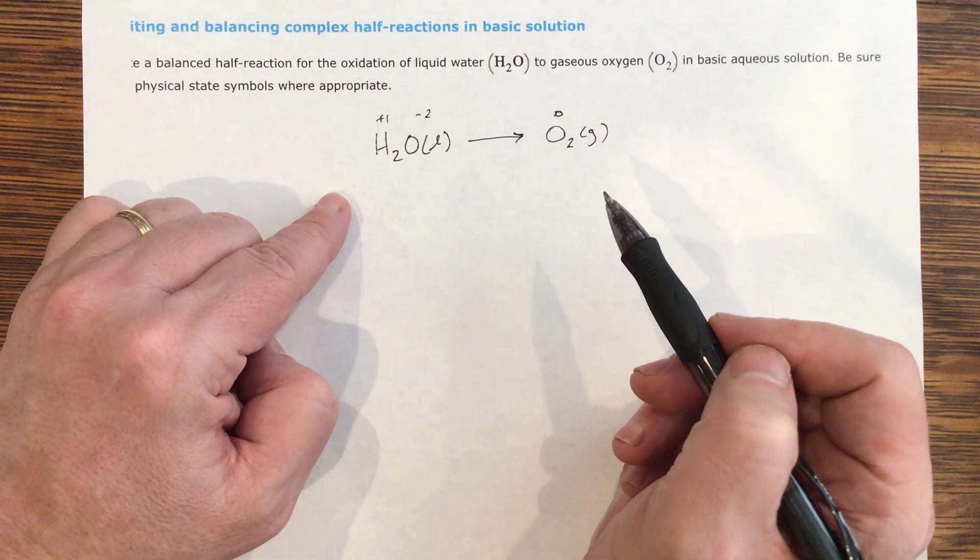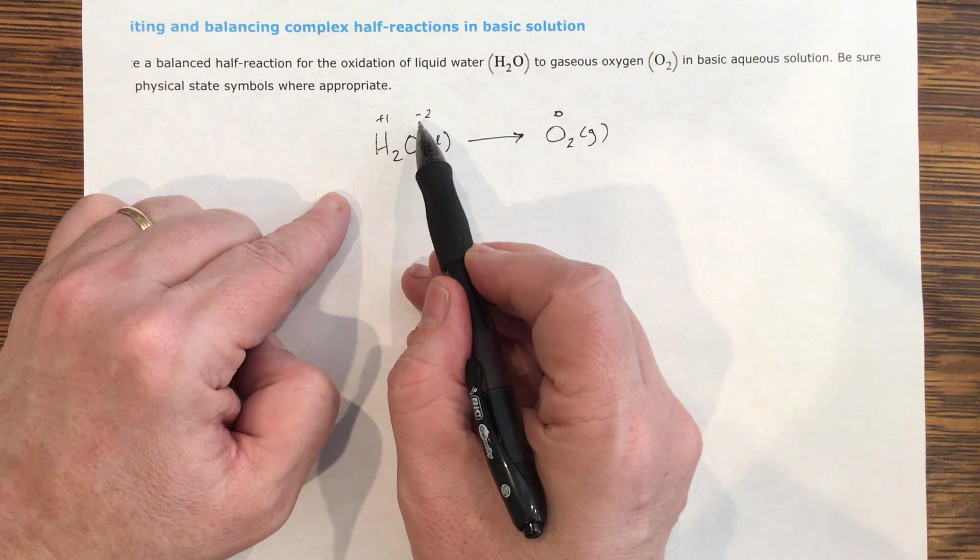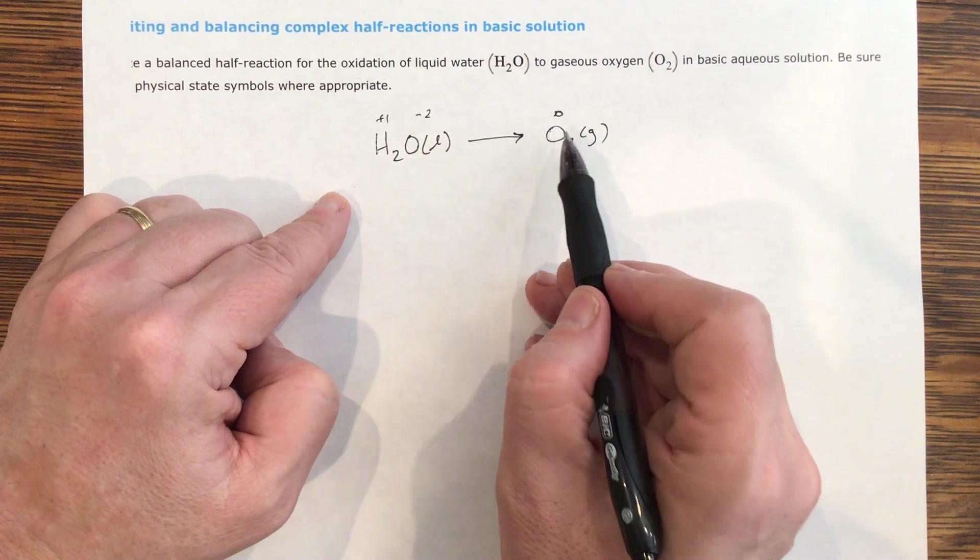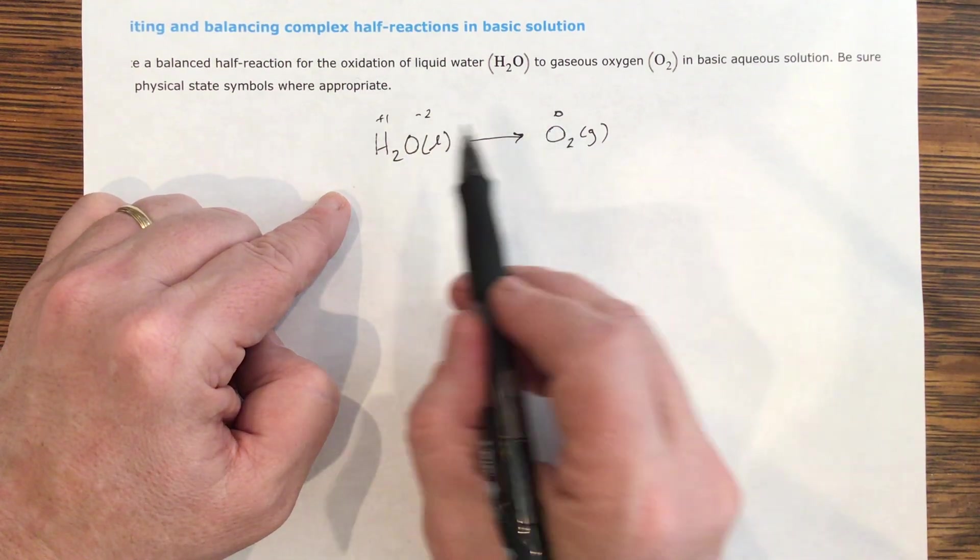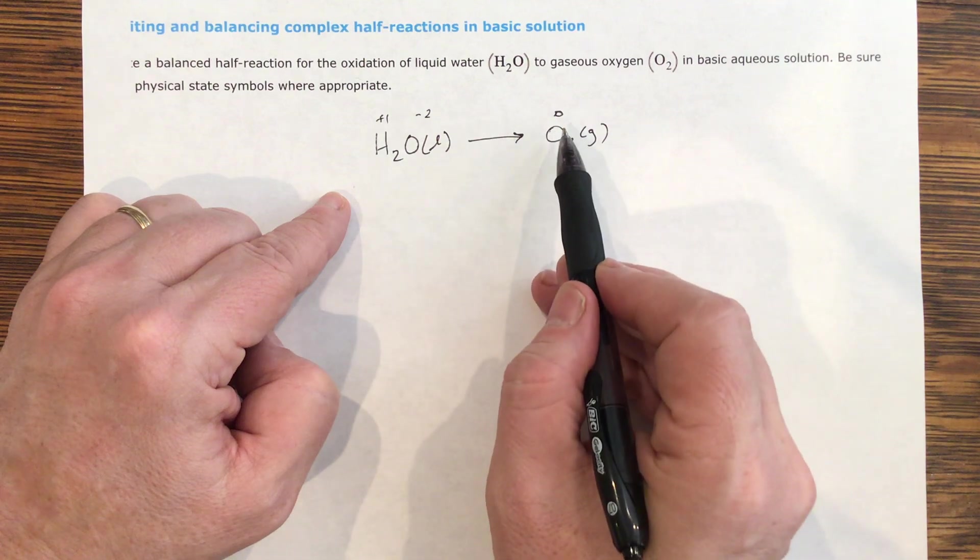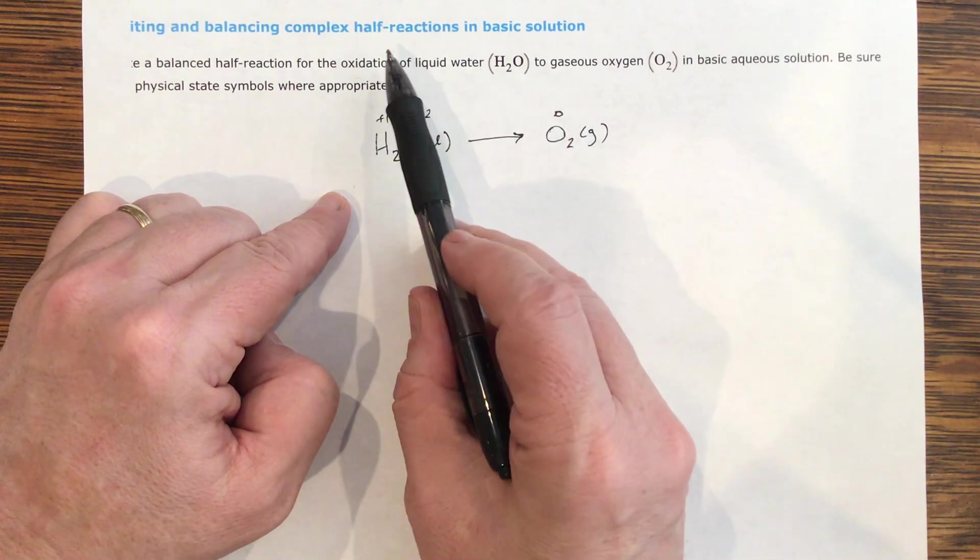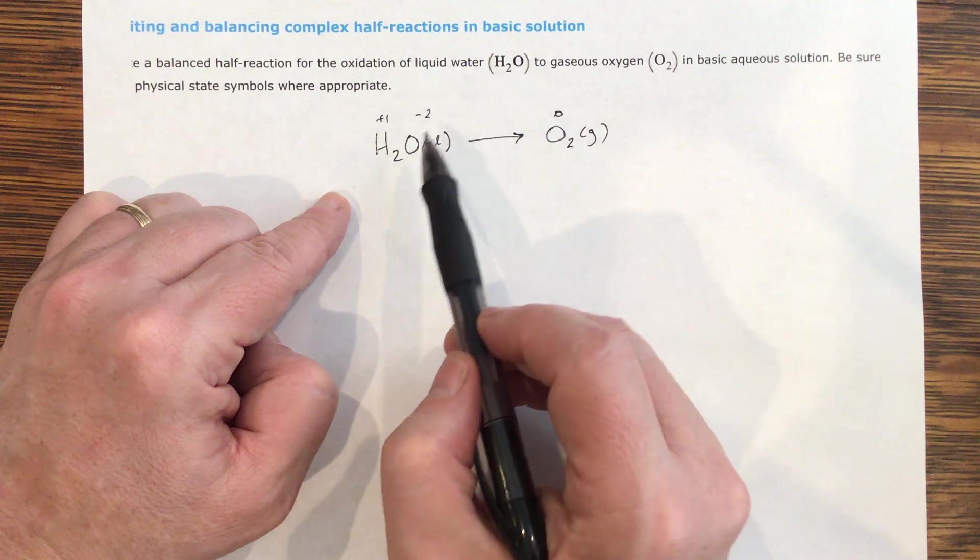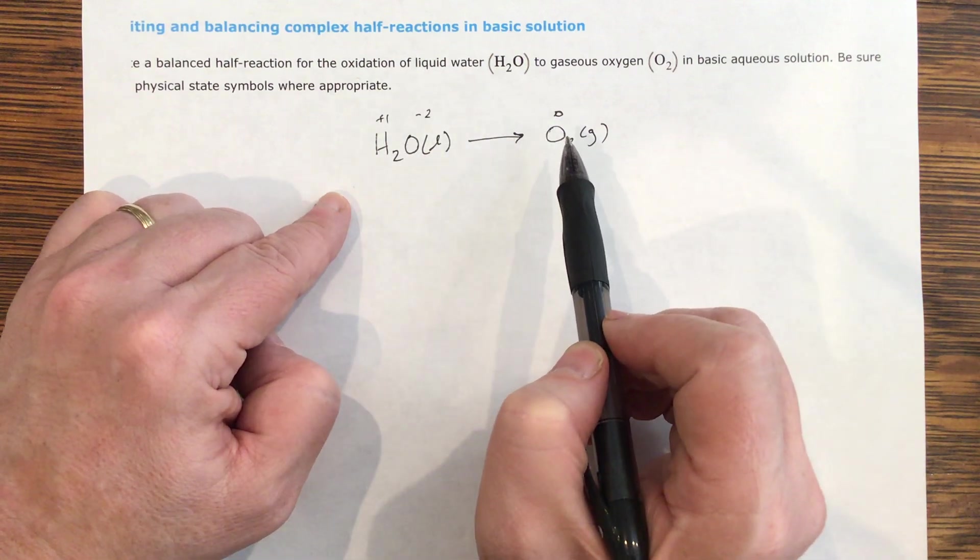So what has happened? The negative two has gone up to zero. So this is an oxidation step. And that's what we've seen, it's an oxidation of water to oxygen.